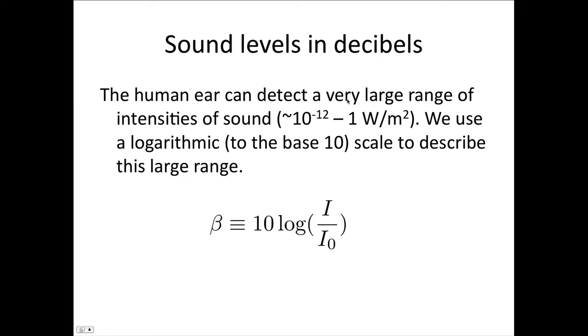OK, on to new material. Sound levels in decibels. The human ear can detect a very large range of intensities of sound from 10^-12 up to 1 watt per meter squared. We use a logarithmic base-10 scale to describe this large range. So β, which is the sound level in decibels, is given by the expression 10 log(I/I_0), where I is the intensity and I_0 is the reference intensity.